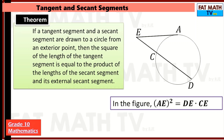Another theorem: if a tangent segment and a secant segment are drawn to a circle from an exterior point, then the square of the length of the tangent segment is equal to the product of the length of the secant segment and its external secant segment. So EA squared equals DE times CE.